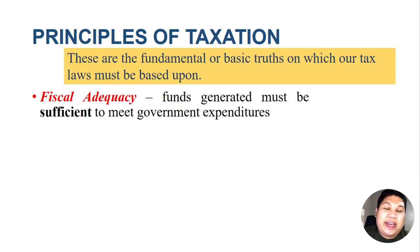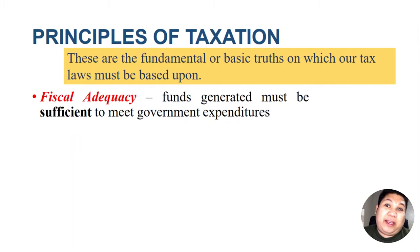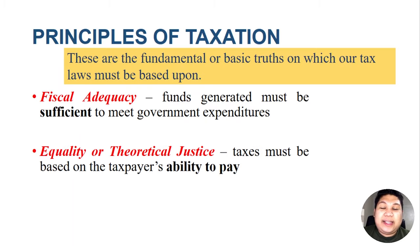The first principle of taxation is fiscal adequacy. The funds or taxes generated from the tax laws must be sufficient or enough to meet government expenditures, because the primary reason why the government imposes a tax is to raise funds and revenue. Hence, the taxes generated must be enough or equivalent to the government expenditures — fiscal adequacy.